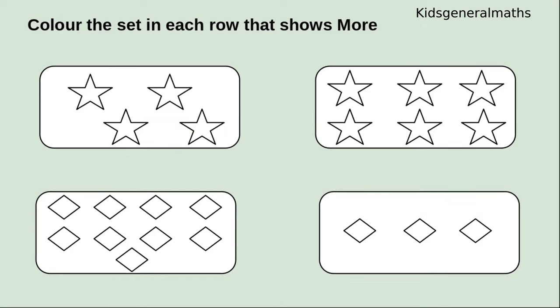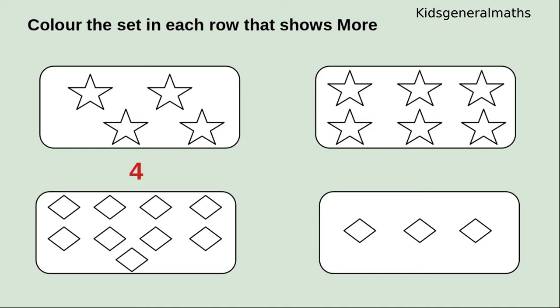Next we are going to color which is more. In the first two boxes, 1, 2, 3, 4 — how many stars? 4 stars. The next two boxes has 1, 2, 3, 4, 5, 6 — how many stars? 6 stars. So we are going to color which is more. While comparing these two numbers, 4 and 6, which is more? Yes, 6 is more. So we are going to color the 6 stars.